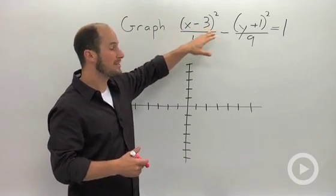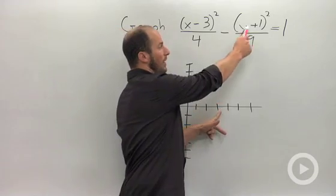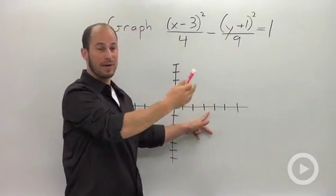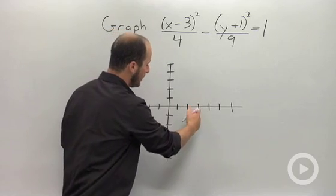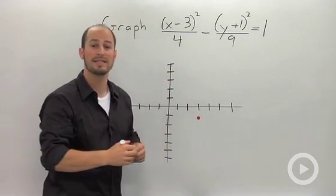So looking at here, x minus 3 tells us that 3 is our x-coordinate for our center. y plus 1, y minus negative 1, that tells us negative 1 is our y-coordinate. So we end up with (3, -1) as our center.